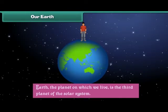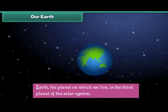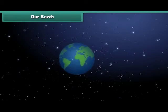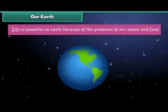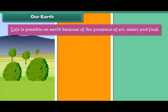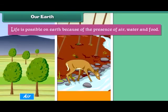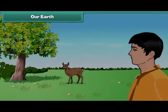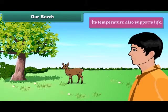Earth, the planet on which we live, is the third planet of the solar system. Life is possible on Earth because of the presence of air, water and food. Its temperature also supports life.